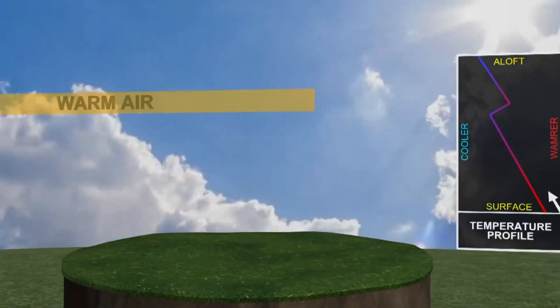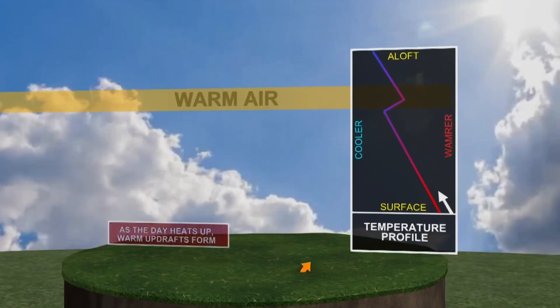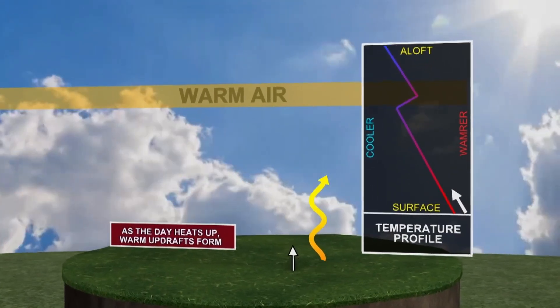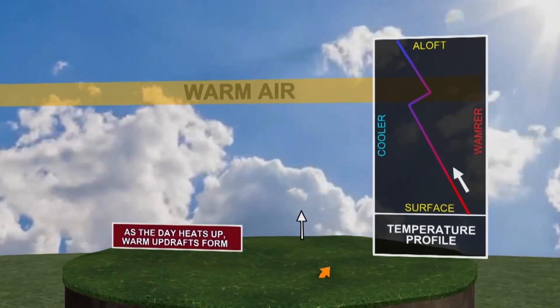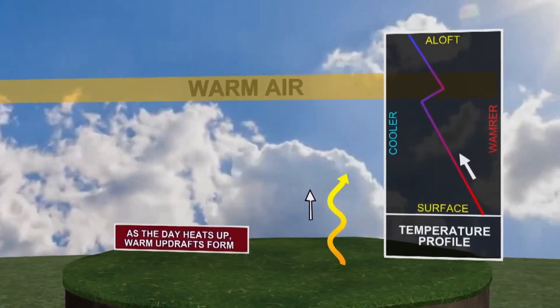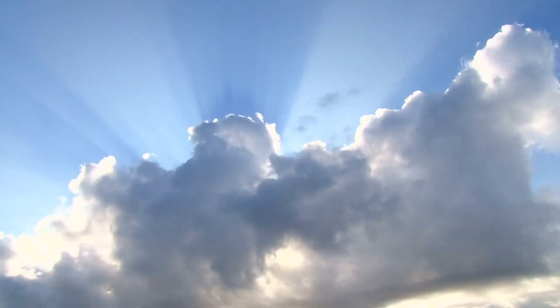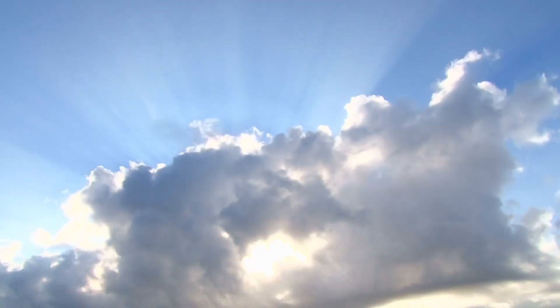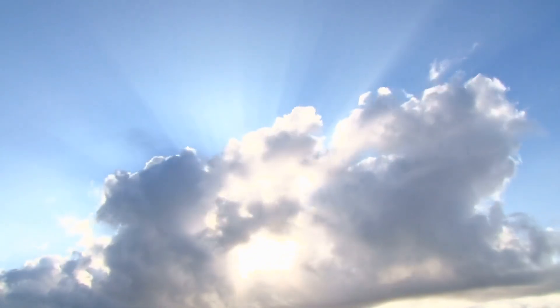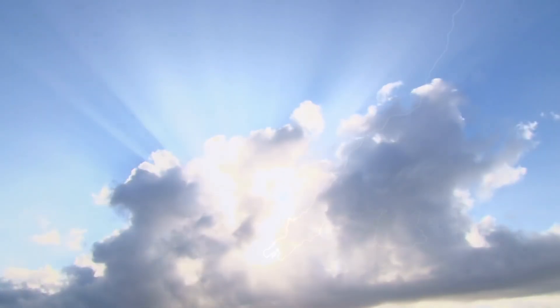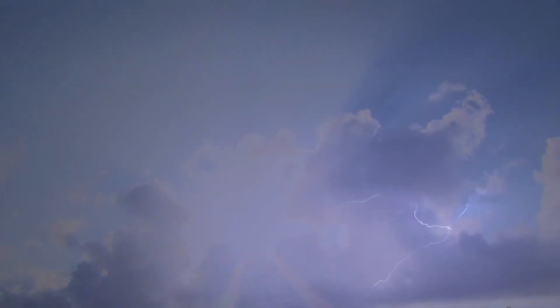The cap is a warm layer of dry air that can range anywhere from the surface up to 10,000 feet. Depending on how strong the layer is, it can prevent a single storm from forming, even when the atmosphere is juiced up perfectly.